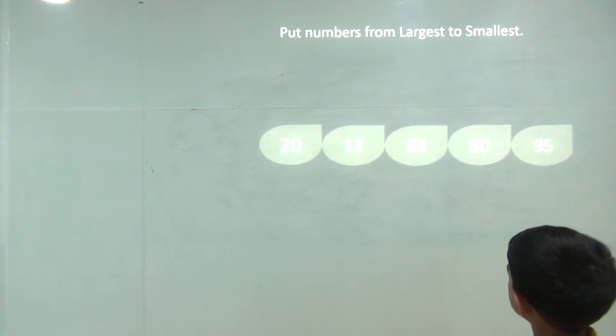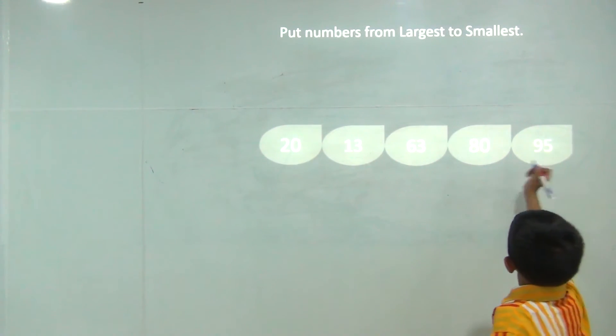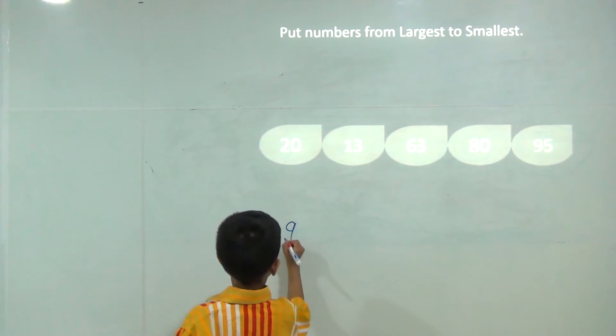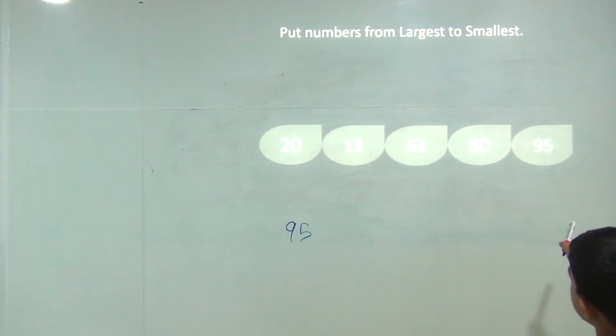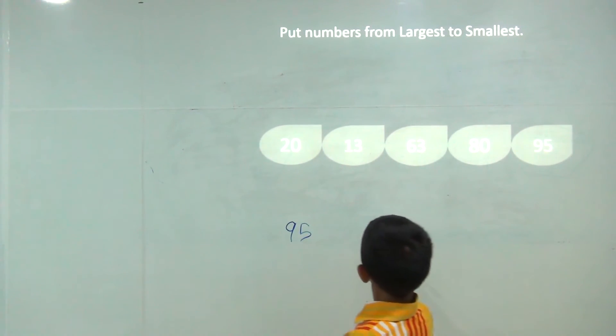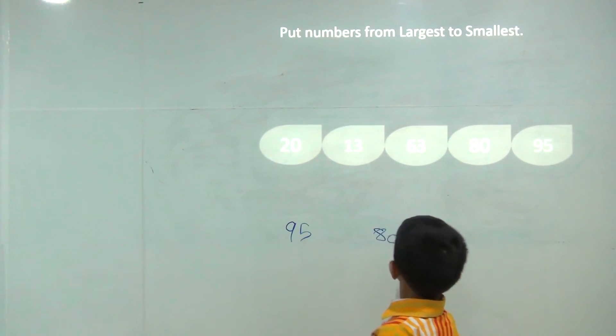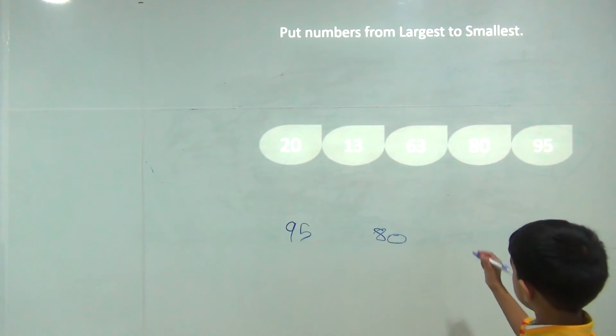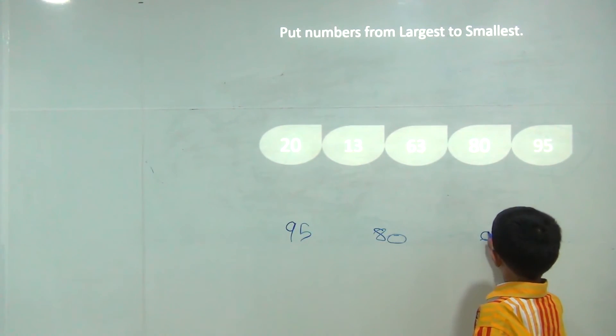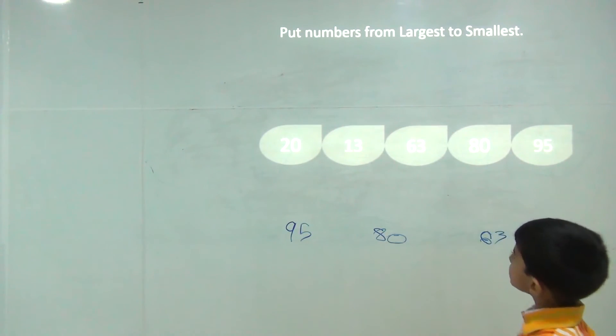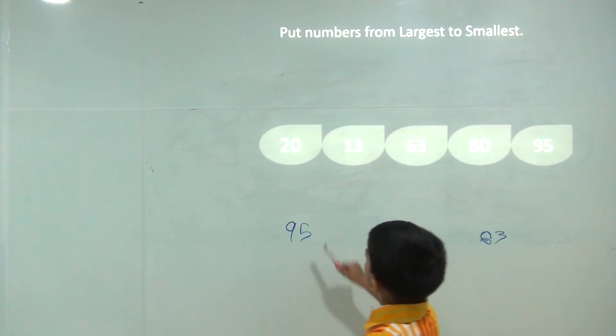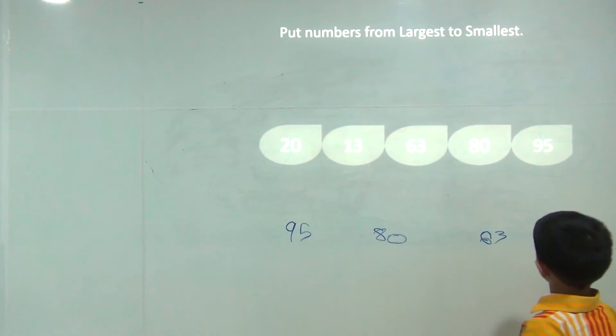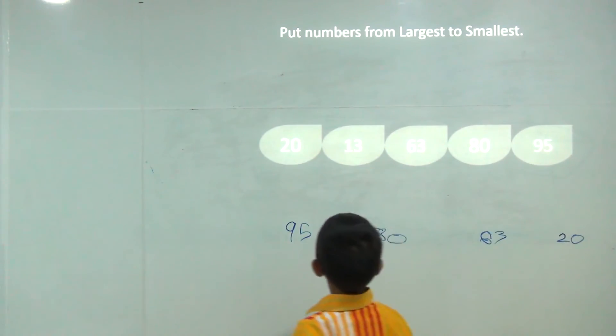Smaller than 80 is 63, smaller than 63 is 20, and smaller than 20 is 13.